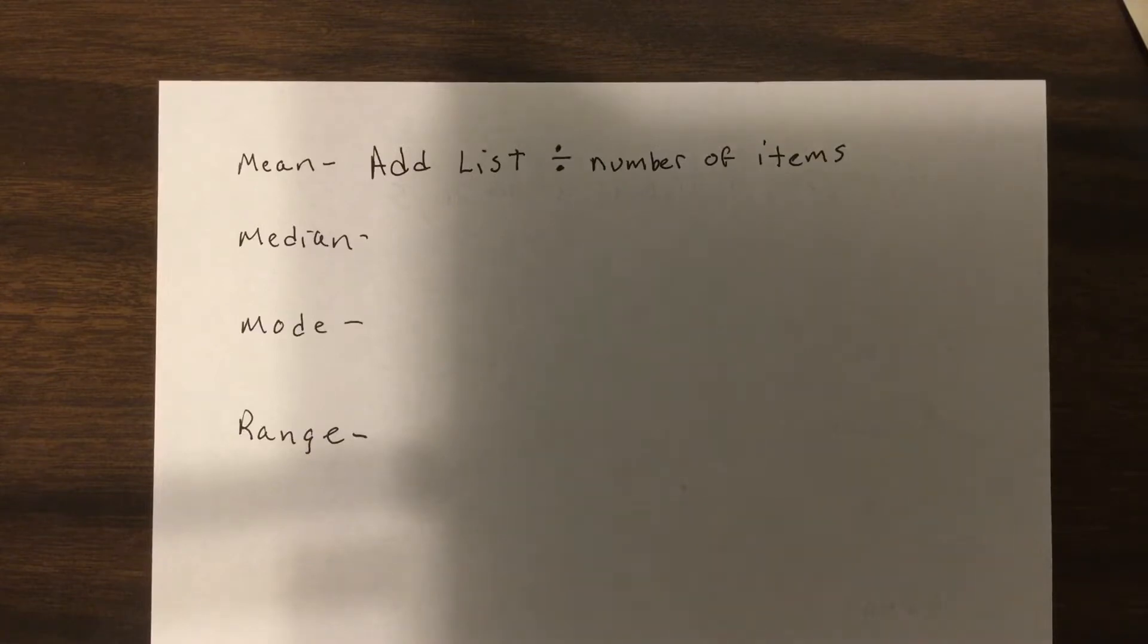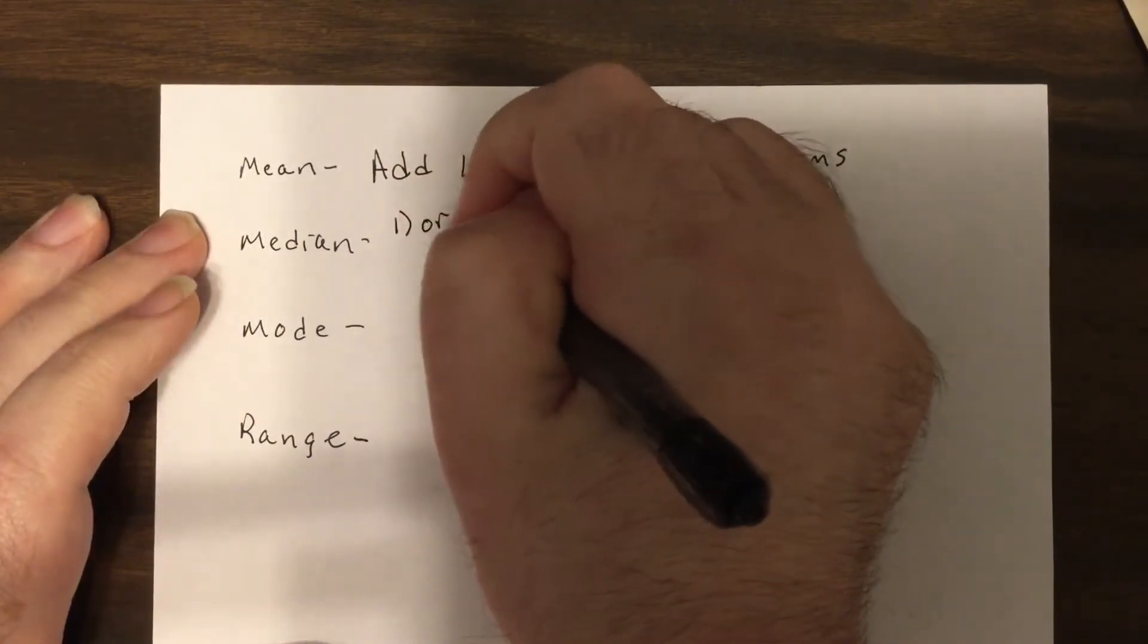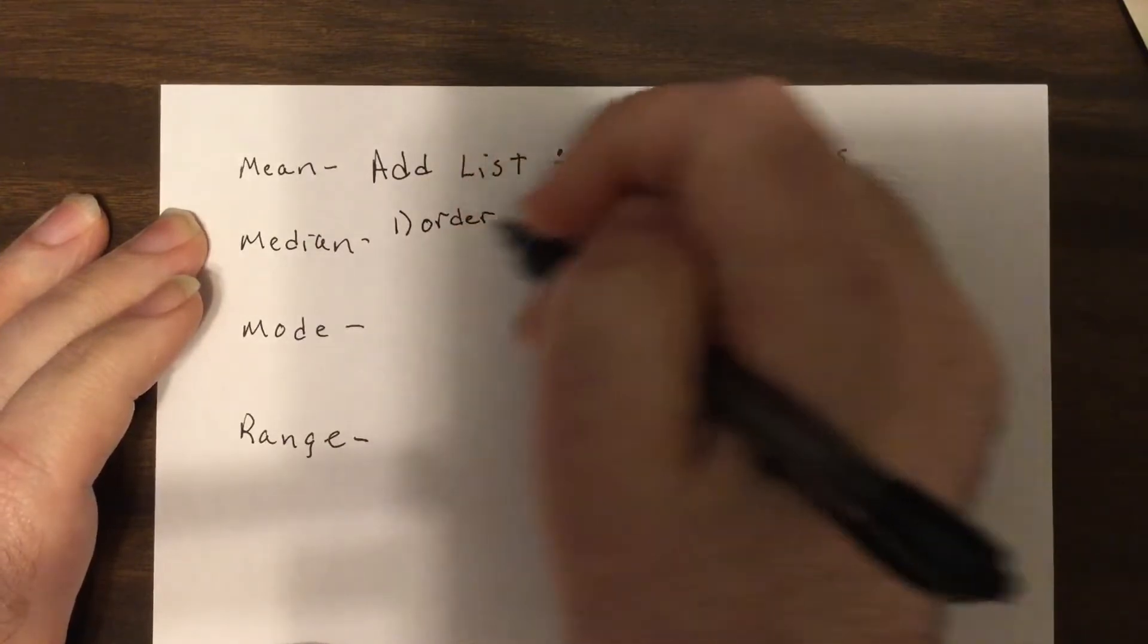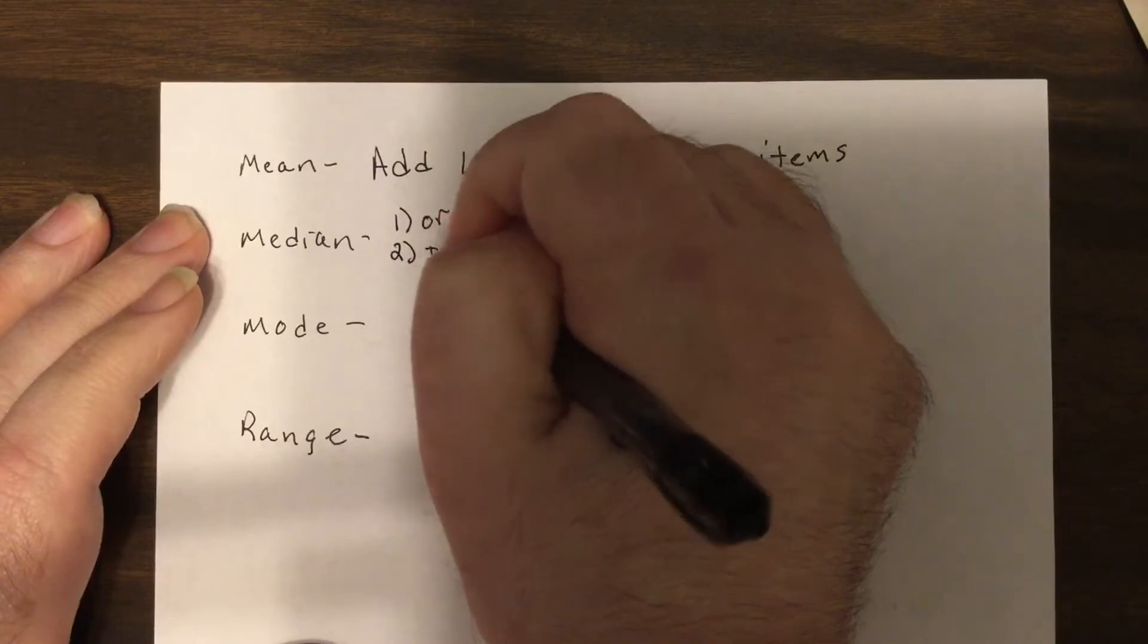They call it something that doesn't really go with the data. For the median, you do two things. You order the list, put it biggest to smallest or smallest to biggest, one or the other. Then it's the item in the middle.